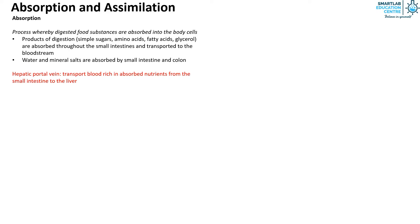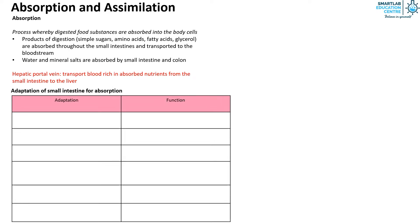Let's look at the adaptation of small intestine for absorption. The small intestine is very long and folded, and this increases the surface area to volume ratio for absorption to take place rapidly.